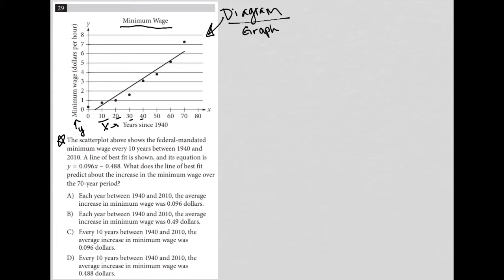And it has an equation, which I tend to always write down. So I'm going to say the equation for this line of best fit is y equals 0.096x minus 0.488. Now remember, anytime you see an equation in this format, you should be thinking y equals mx plus b. So for us, that means that m is equal to 0.096 and b is equal to negative 0.488.